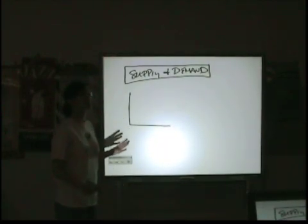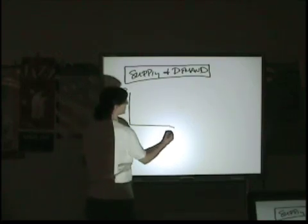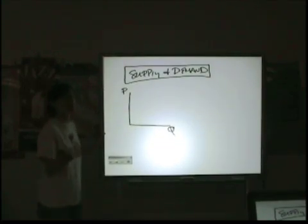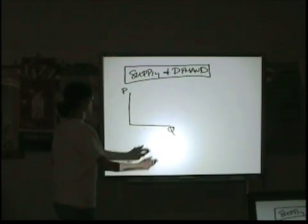Remember that the way you want to draw these is to have price vertical, quantity horizontal. It's counterintuitive if you know anything about mathematics. I've asked professors before why this seems a little backwards. They don't know. This is just how it's drawn. So don't get creative with this. Price vertical, quantity horizontal.